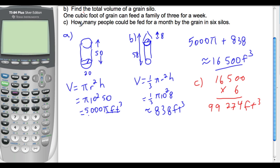In the last part, we know that one cubic foot of grain can feed a family of three for a week. How many people could be fed for a month, let's assume that's four weeks, by the grain in six of the silos? We know that 16,500 cubic feet is the amount in one silo. We multiply that by six to get 99,274 cubic feet overall. So, then we need to take this and think about what's happening.